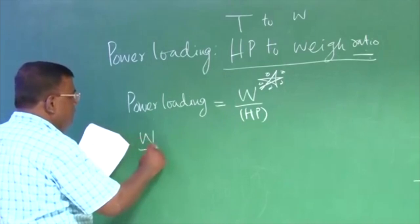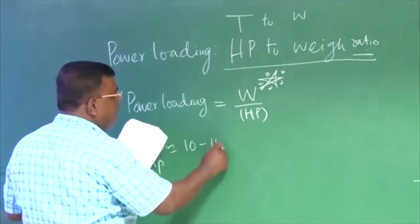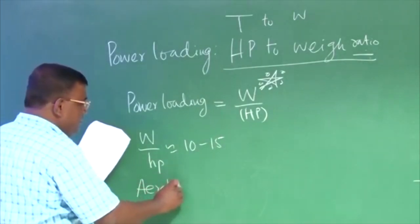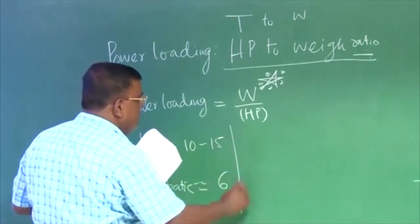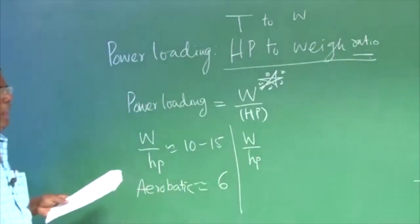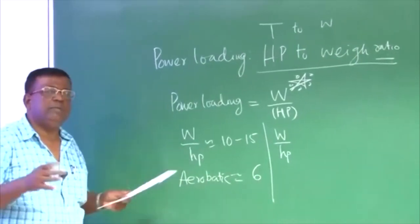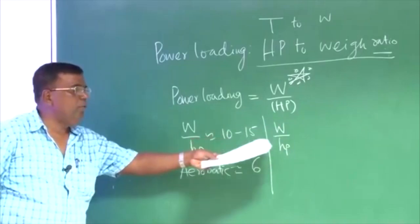Typically for airplane, this ratio could be of order of 10 to 15. For aerobatic, it is 6. What is this 6? This is W by horsepower. They are typical numbers. You can get this number for different weight class of airplane, but this you understand, this will have something to do with the weight as well. Very, very important thing. That is why W by hp.